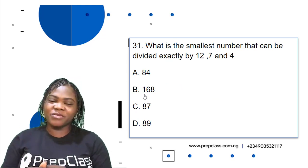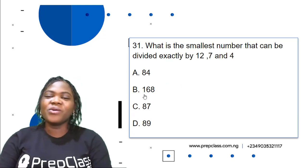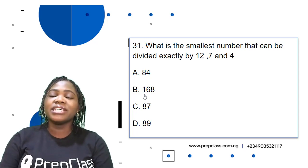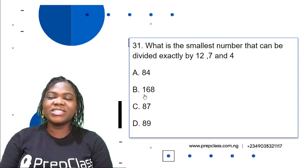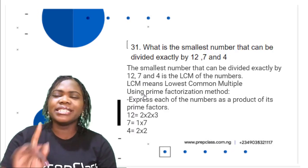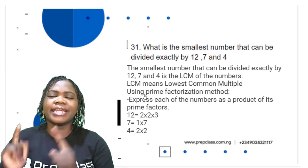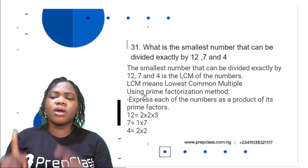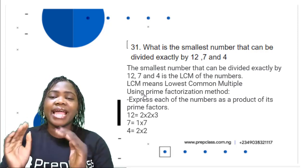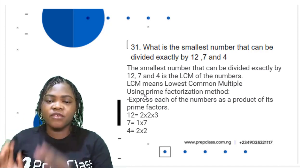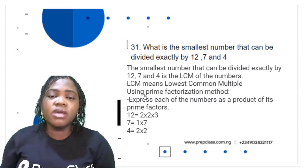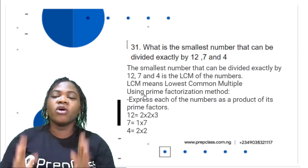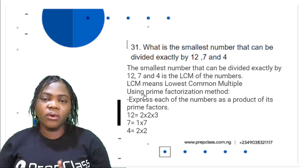Question 31: What is the smallest number that can be divided exactly by 12, 7, and 4? The smallest number that can be divided exactly by 12, 7, and 4 is the LCM of the numbers. So this is the same thing as asking you to find the LCM of 12, 7, and 4.